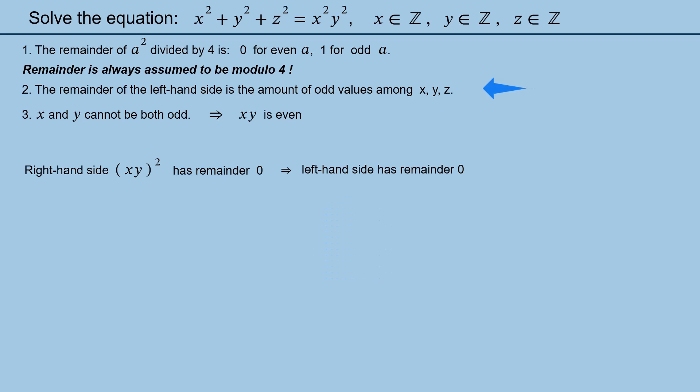Look at the statement 2. According to it 0 remainder of the left-hand side means no odd values among x, y, and z. In other words x, y, and z are all even. So we can write x = 2x₁, y = 2y₁, z = 2z₁, where x₁, y₁, and z₁ are all integers.